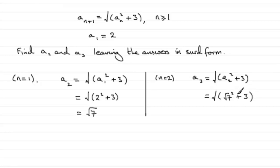Now, root of 7 squared is going to be 7, so 7 and 3 gives us 10. So we end up with a3 being equal to the root of 10. Okay, there you go. a1 is 2, a2 is root 7, and the third term, a3 is root 10.